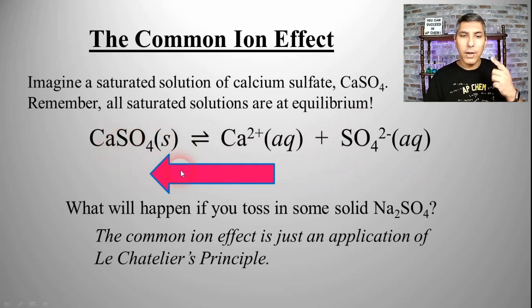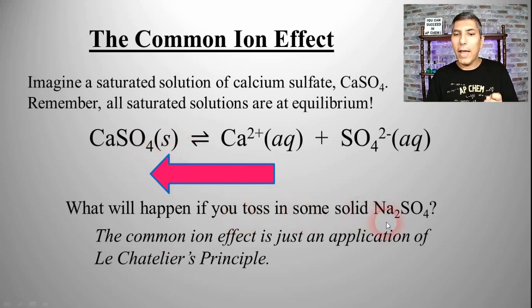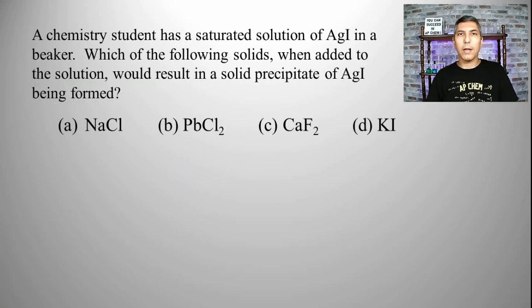What we're going to observe is calcium sulfate solid being formed. This is happening because the fact that we've added sulfate ion reduces the ability of this solution to dissolve that calcium sulfate. Now, let's take a look at a couple of examples where we have to consider the common ion effect.